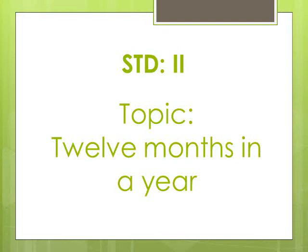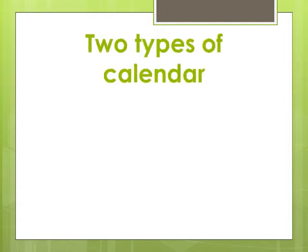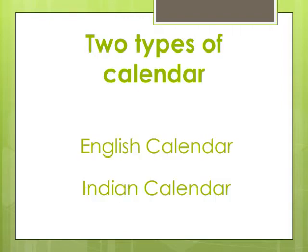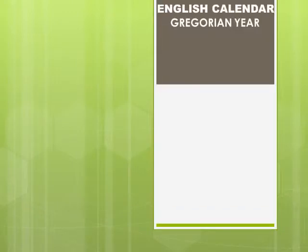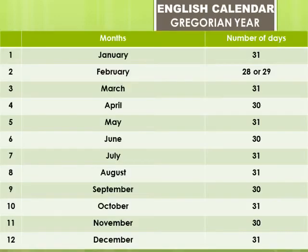Hello students, today we are going to learn a new topic: 12 months in a year. There are two types of calendar — English calendar and Indian calendar. So students, let's first learn the English calendar. It is also called the Gregorian year. Let's read the months and number of days in them. The year begins with the month of January and ends with December.